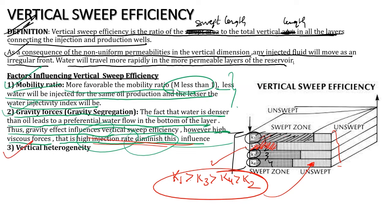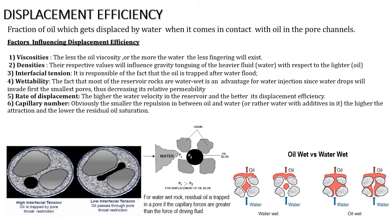Third factor is vertical heterogeneity — because of the layering of the reservoir, water tries to move through the least resistance path or through the high permeability streak, reducing vertical sweep efficiency.